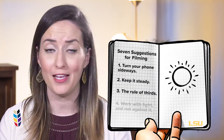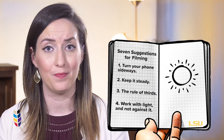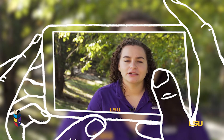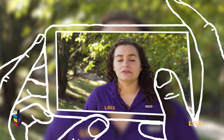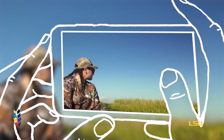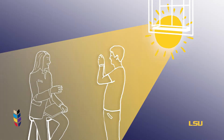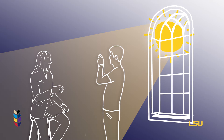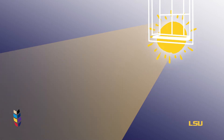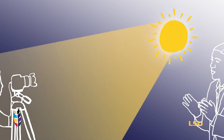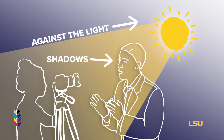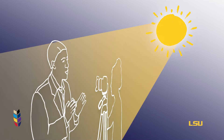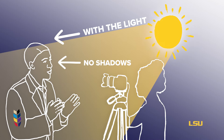Four, work with light and not against it. If you're outdoors, make sure that you find a spot where the sun is evenly lighting either the subject or the scene you want to film. For example, windows can act as a natural softbox to diffuse some of the harsh sunlight. If some parts of the shot are looking too bright or too dark, change your position or angle to achieve the shot that you want so that you are working with the light and not against it.